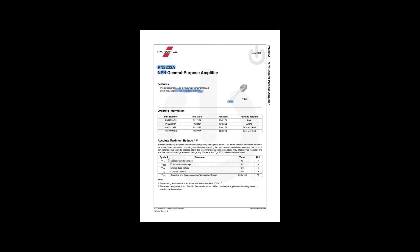Under features, sometimes you'll see a longer list, but here there's one very important point: the collector current this transistor is specified for, which is 500 milliamps - half an amp. Below that we have absolute maximum ratings, which are some very important values. The collector-emitter voltage - the voltage across the transistor itself - has a maximum value of 40 volts.